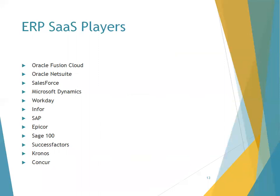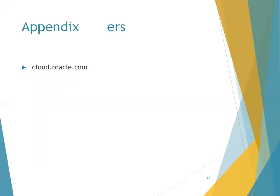SaaS doesn't always mean ERP — software as a service can be any application, like Office 365 or Gmail. From Oracle specifically, the ERP SaaS products are Oracle Fusion ERP (also called Oracle Fusion Cloud) and Oracle NetSuite. Other notable SaaS vendors include Salesforce CRM (world number one CRM), Workday for HRMS, SAP for manufacturing, SuccessFactors for HRMS, and Kronos for GL. Navigate to cloud.oracle.com to explore all Oracle cloud products. This concludes the high-level overview of cloud computing.